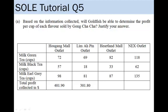So as suggested by the video hint, what Goldfish is going to do is to form a system of linear equations and try to solve the system of linear equations so as to find the unknowns. In this case, the unknowns are going to be the profit per cup of each flavour.